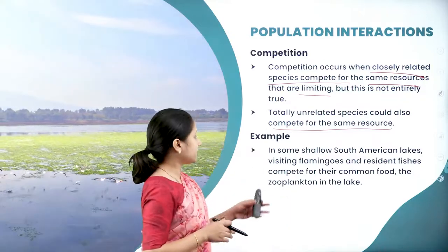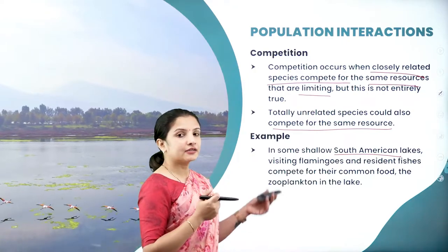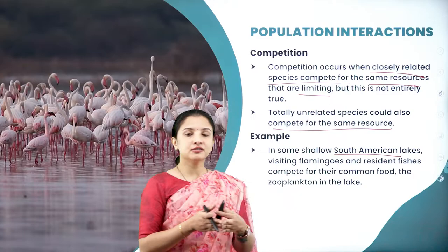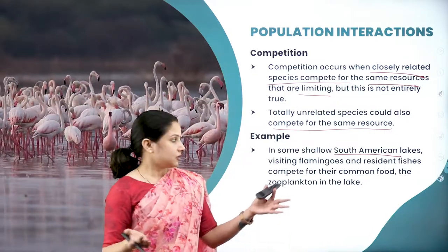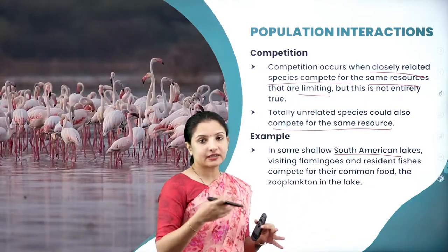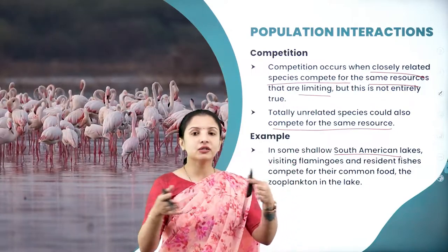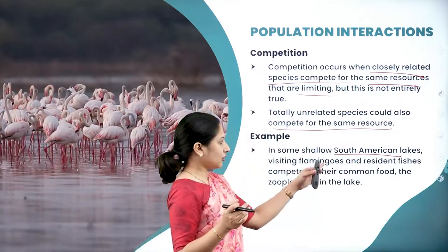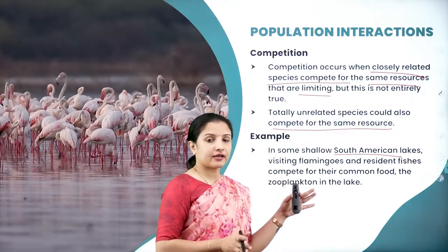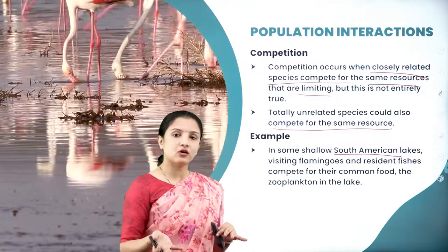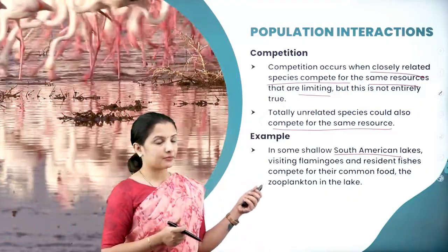A good example is from some shallow lakes of South America, where flamingos usually feed on oysters, fishes, and zooplanktons in the lake. Flamingos belong to the bird family — the aves — whereas zooplanktons and other aquatic forms are completely different species. So competition is occurring between entirely different species: the flamingos feed on the fishes, the oysters, and the zooplanktons, and in turn the fishes also feed on the zooplanktons in the lake.